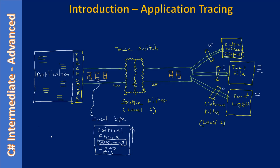The trace source sends all messages from different parts of the application code. Those messages get filtered in the trace switch, so the key components are: trace source, trace switch, and listeners. In this series we will learn trace source, trace switch, event types, and how to log trace information to the debug output window, a text file, and the event logger. The second-level listener filter will not be demoed.